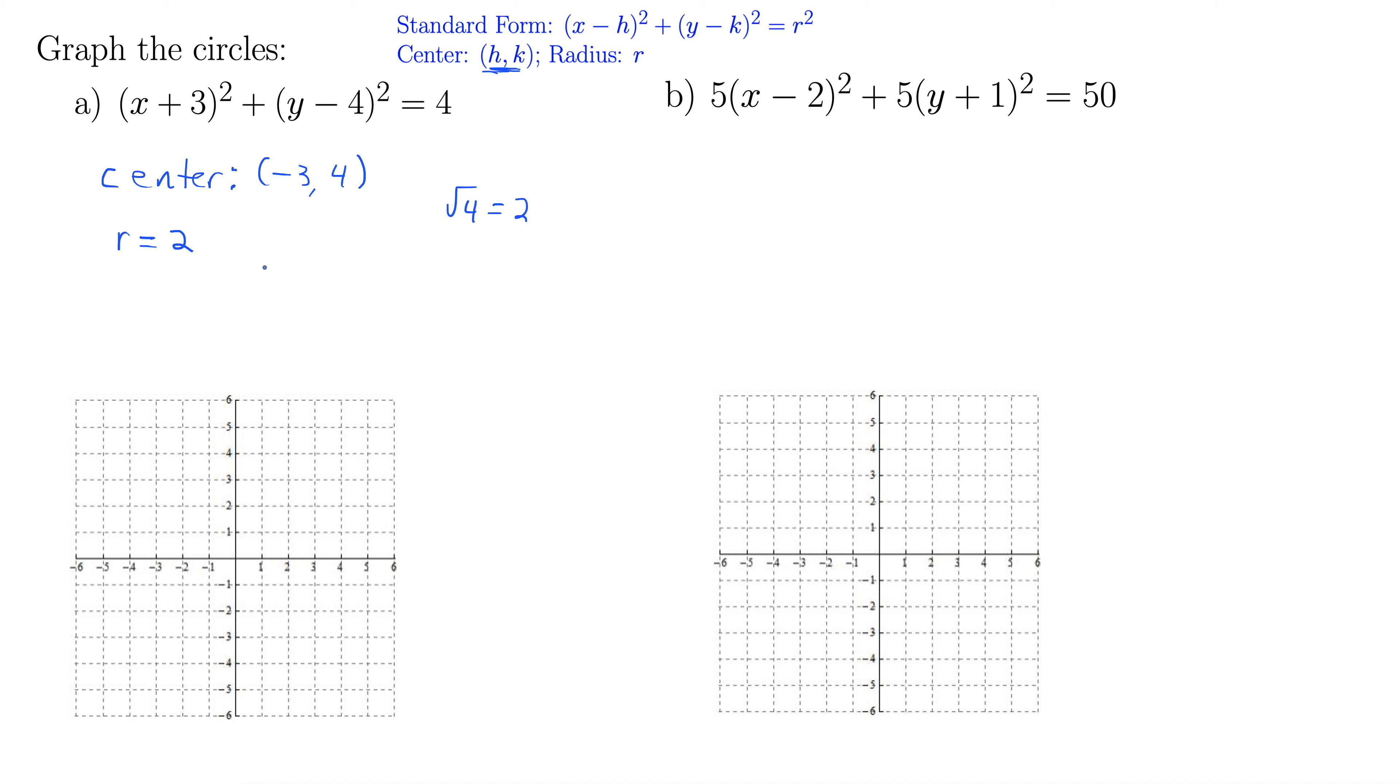If you really want to be technical about this, you could rewrite this as (x - (-3))² + (y - 4)² = 4. And then you can see very clearly you have your h and your k. But usually I just think of it as taking whatever sign you have, changing it, and it gives you your center as needed.